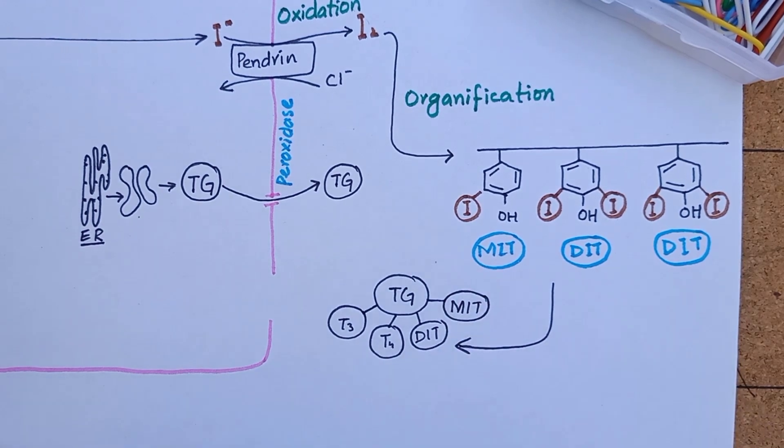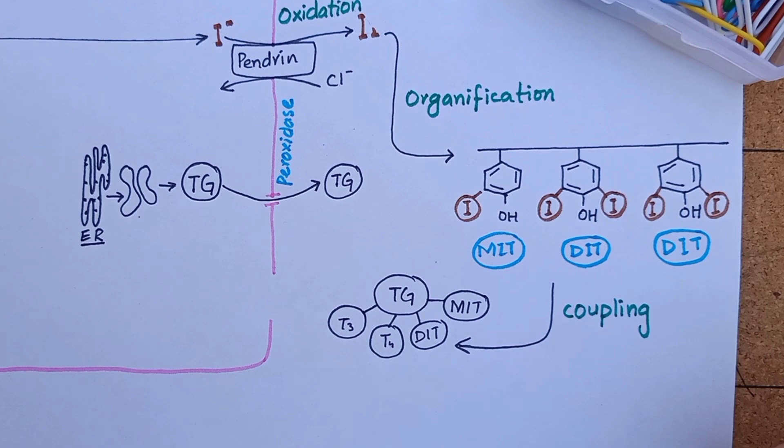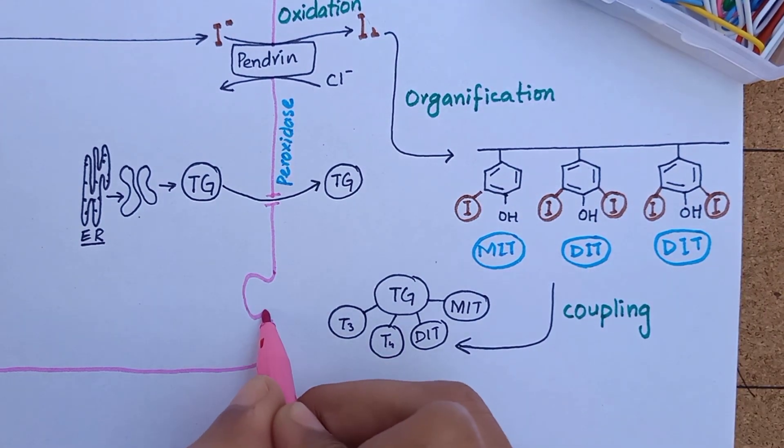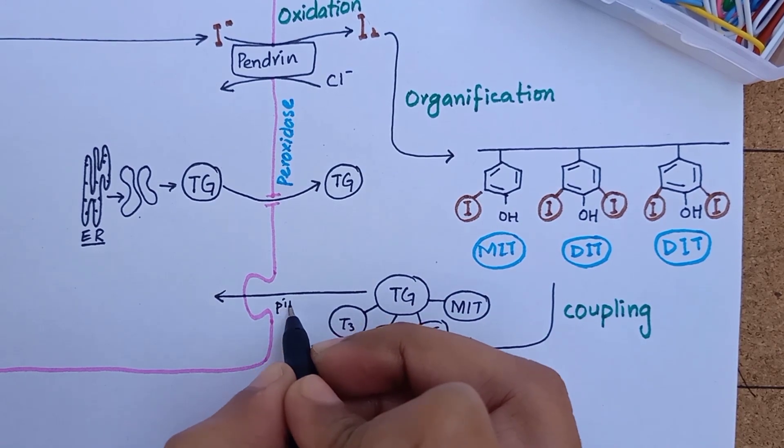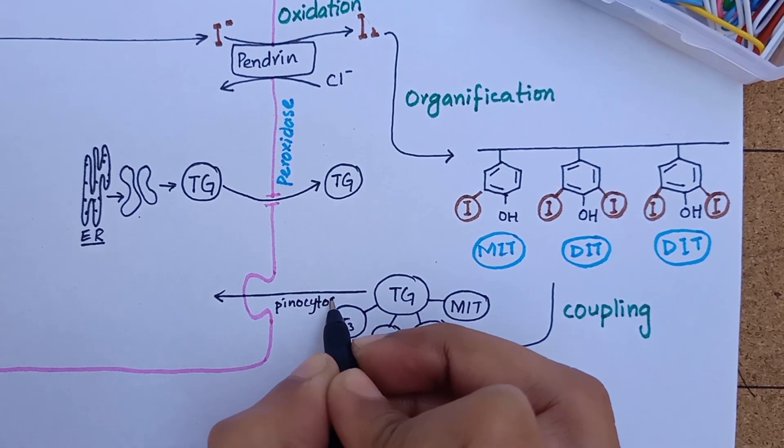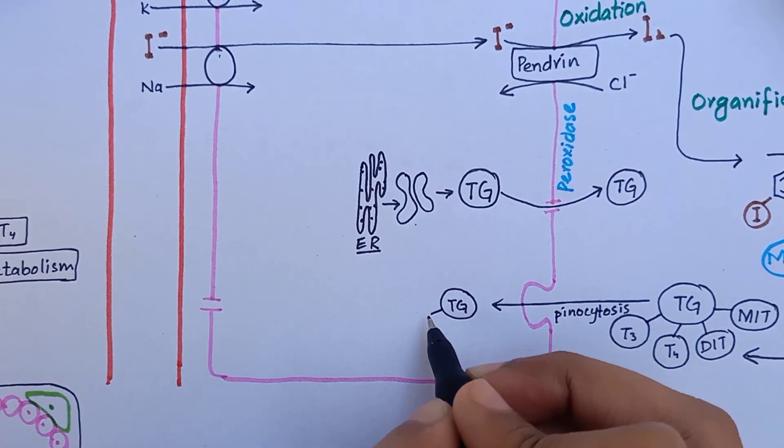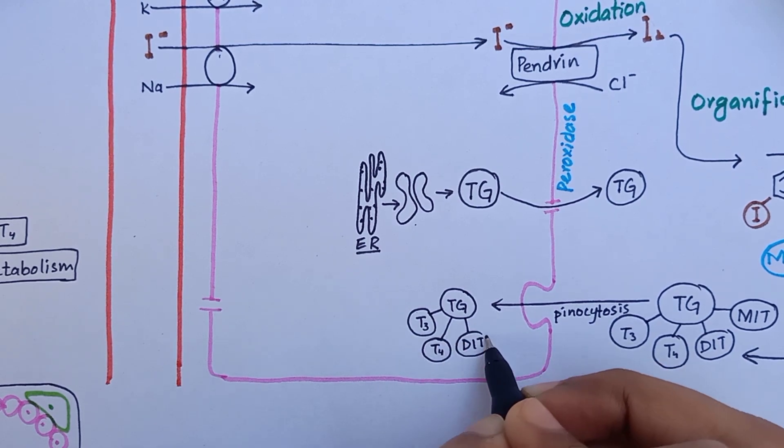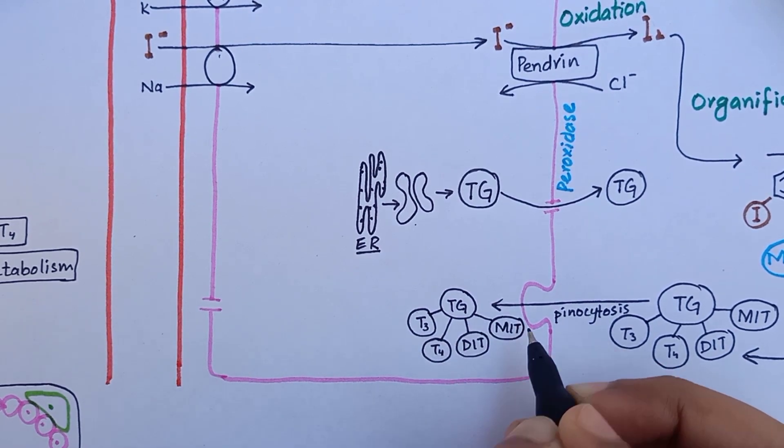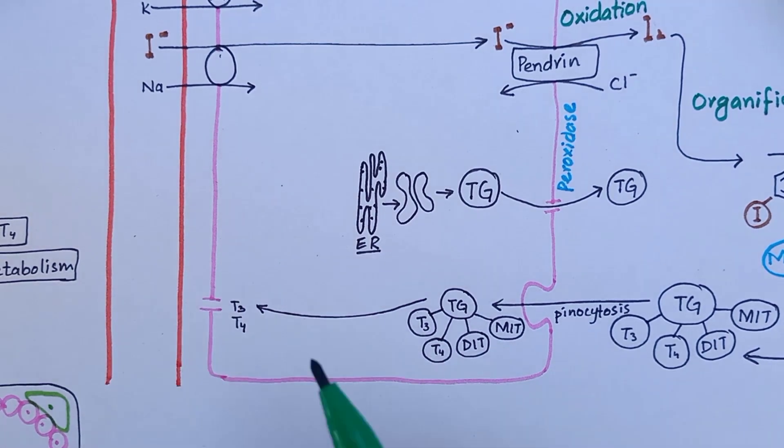This T3 and T4 is not metabolically active yet because it is still attached to the thyroglobulin molecule. So this large iodized thyroglobulin enters back into the follicular cells by the process known as pinocytosis. Inside the cell there are many lysosomes that contain protease enzyme.